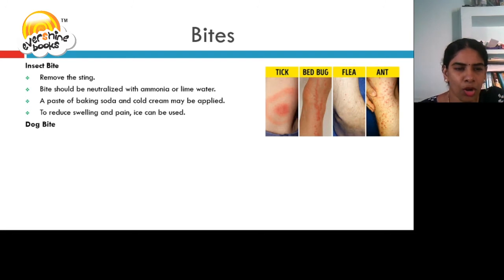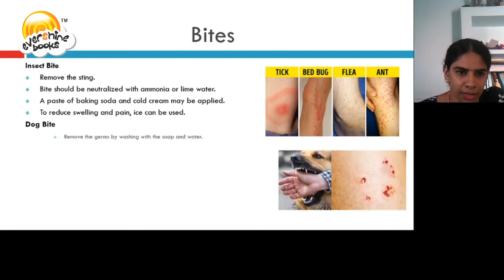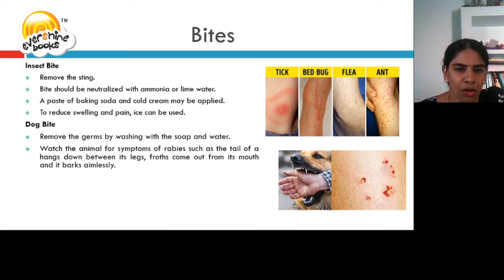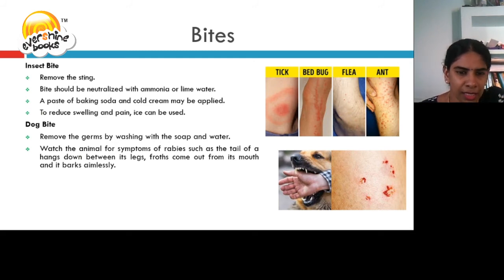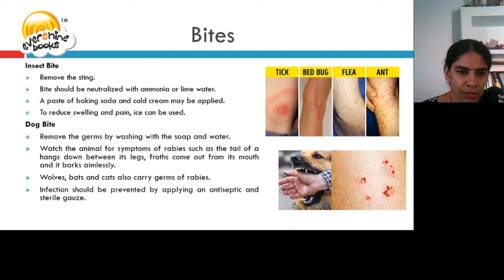Let us discuss about dog bites. When a dog bites, we need to first remove the germs by washing with soap and water. Watch the animal for symptoms of rabies, such as the tail hanging down between its legs, froth coming out from its mouth, and aimless barking. Wolves, bats and cats also carry the germs of rabies. Infection should be prevented by applying an antiseptic and sterile gauze.